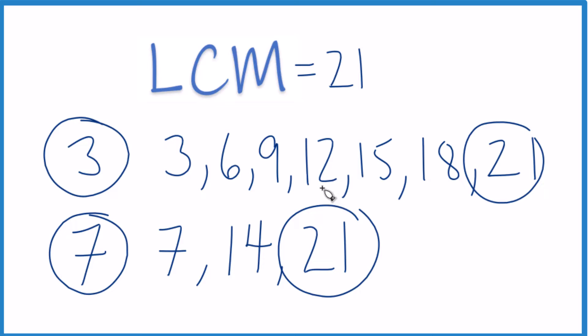You could also use prime factorization — that works well, but usually if you have bigger numbers. For the LCM of 3 and 7, this method works pretty well.